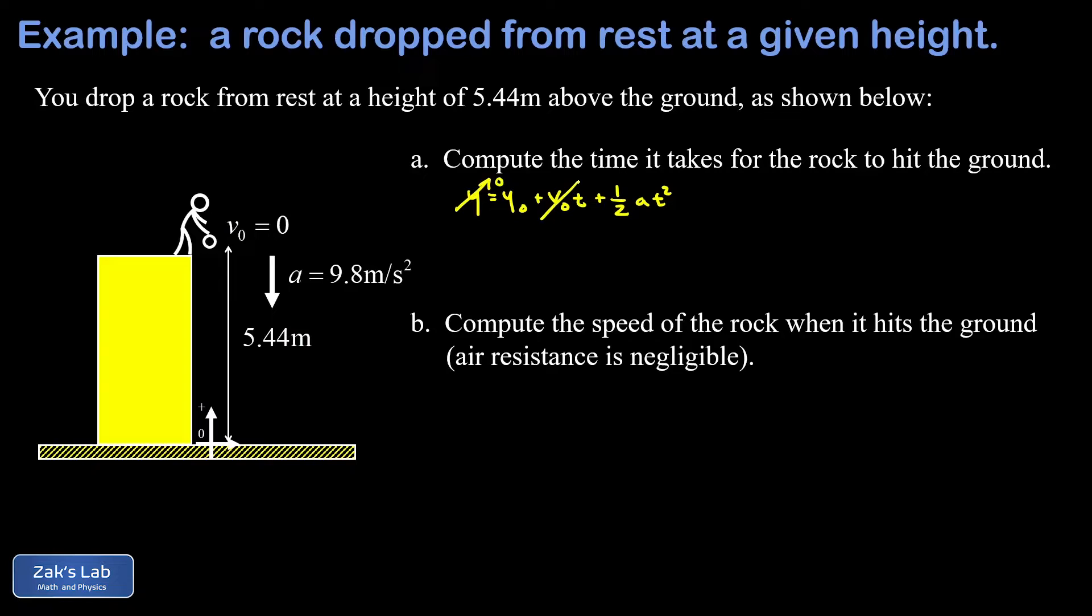And so our final y value when this thing hits the ground, that's zero. The initial velocity, it was released from rest, so that's zero as well. And since we know the initial y value of 5.44 meters, and we know the acceleration caused by gravity, t is the only unknown in this equation, and we should be able to solve for that pretty quickly.